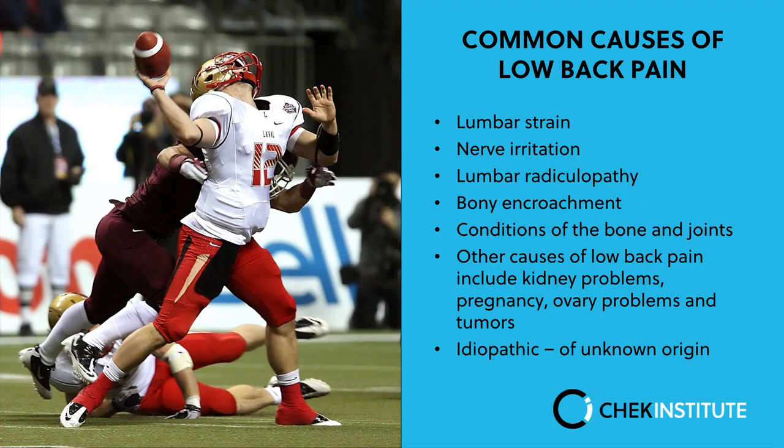You've also got bony encroachment. One example is where two vertebral bodies are not very stable and during movement they move across each other, causing bony tissue to be laid down over time. That bony encroachment can then create a blockage or narrowing of the foramen where the nerves exit from the spinal cord, causing symptoms all the way down that nerve channel.